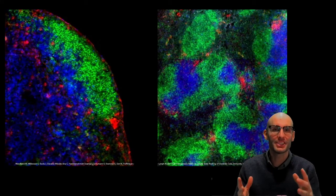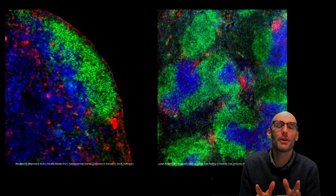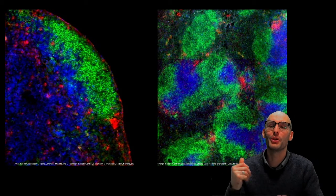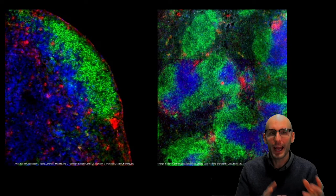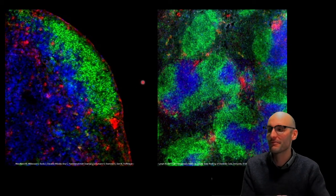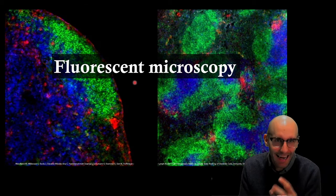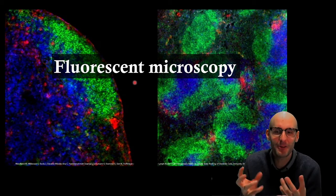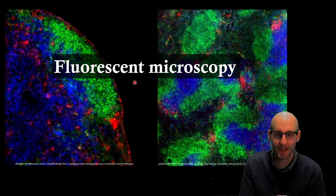Hey team, Dr. Jack Gordy here, and in this video we're going to be going through how did we get these beautiful images? Over here we've got a lymph node, over here we've got a spleen. How did we capture such amazing images? And the answer is fluorescent microscopy. How do we get these amazing images through fluorescent microscopy?